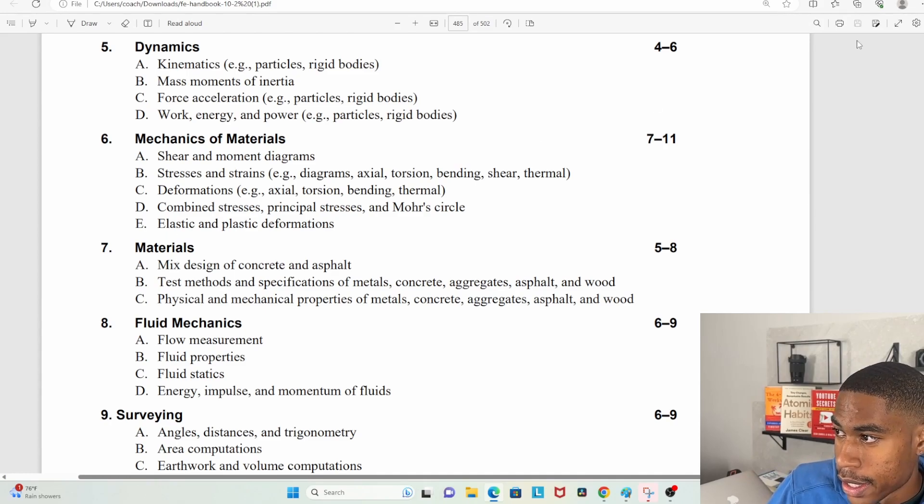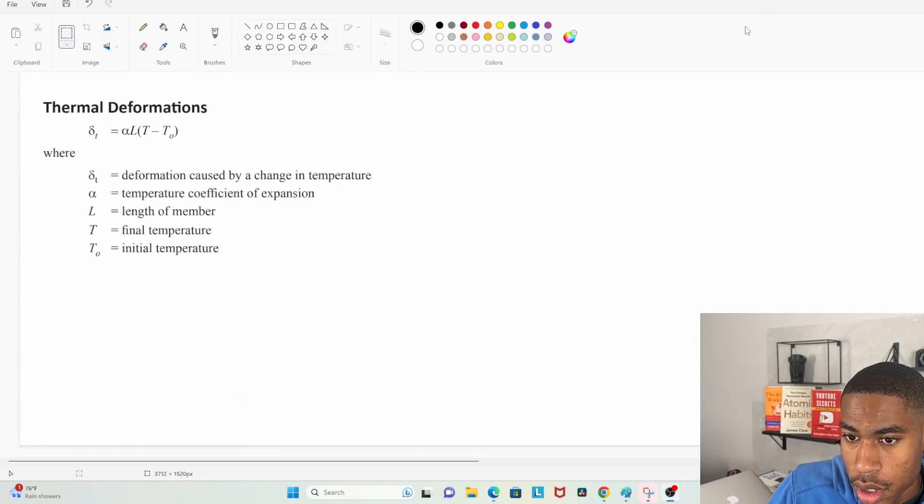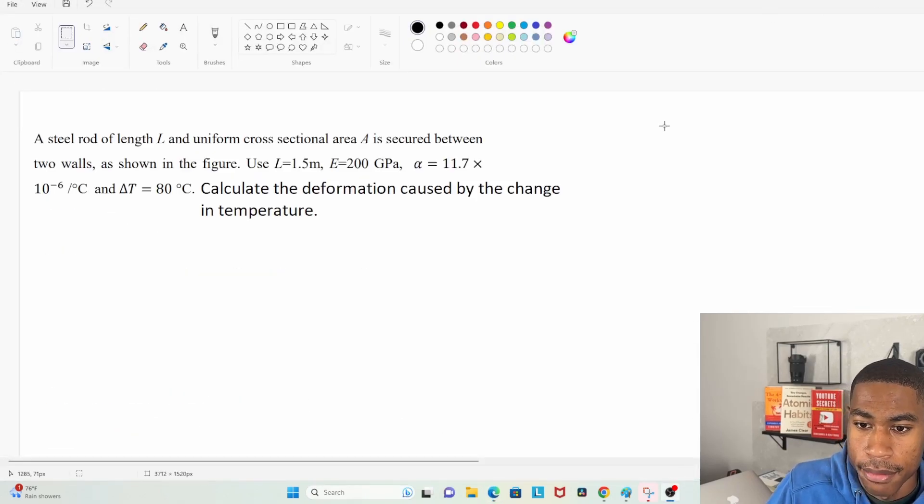So make sure you hit that subscribe button. We are literally coming up on a thousand subscribers which is super exciting. All right, so our practice problem for today says a steel rod of length L and uniform cross-sectional area A is secured between two walls. Okay, there's no figure but we're going to keep going. Use L equals 1.5 meters.